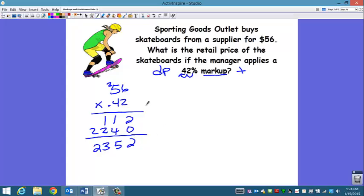And go back and count the number of decimal places in your factors. There are two total, so I need two in my answer. So this is my markup amount. I'm going to markup the price of the skateboard by $23.52. Is that what the question is asking?